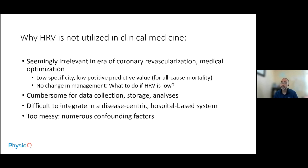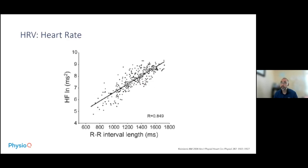The final thing is that heart rate variability tends to be very messy because there are numerous confounding factors. It doesn't discount it — it's just highly sensitive, so many things can affect it. I'm going to spend the last part of this section talking about what factors influence heart rate variability.